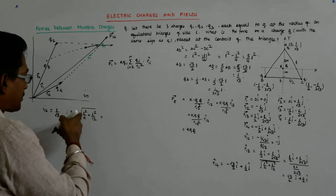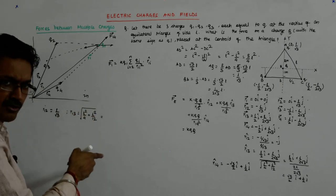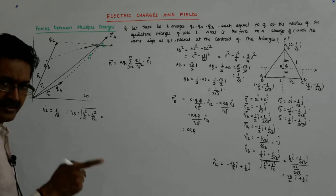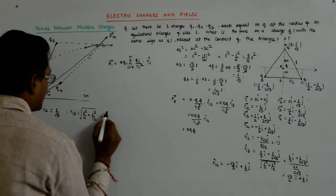So this is, multiply this by 3, 3L square by 12 plus L square by 12, 4L square by 12, that makes it L square by 3, so it becomes L by root 3.